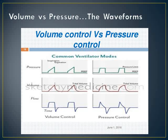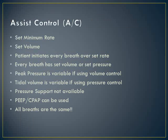In assist control, you set the minimum rate and volume or pressure. The patient can initiate a breath over the set rate if able, and every breath has a set volume or pressure. Pressures vary in volume control; tidal volume varies in pressure control. You cannot use pressure support in this mode, but you can use PEEP. The major takeaway is all breaths are the same. For hemodynamically unstable patients, controlling all breaths helps you track ABGs and control minute ventilation and mean airway pressure.